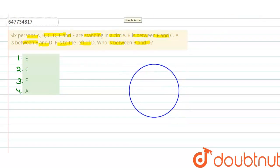Six persons A, 1, 2, 3, 4, 5, and 6. Now, first statement is B is between F and C. If B is between F and C, then F and C will be here. F is on its right and C is on its left.